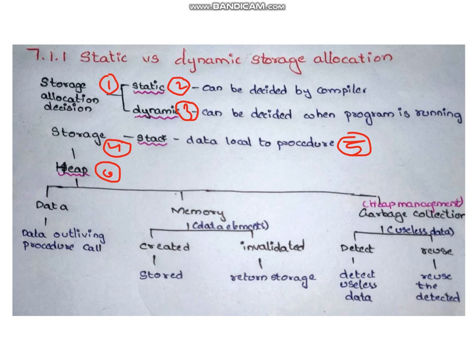Memory: data elements when created are stored and returned when invalidated. Garbage collection is used for heap management — useless data is detected and reused.